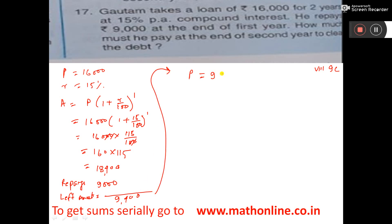Principal will be 9,400 and rate of interest is 15 only. How much he pay at the end of second year to clear the debt? So amount is equal to P into 1 plus R by 100 whole to the power 1. Why? Because second year, so 1 year only.